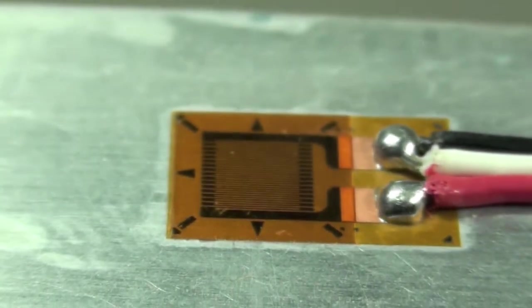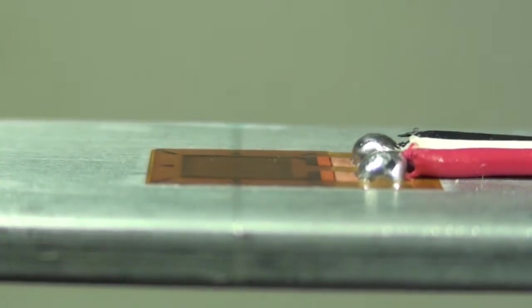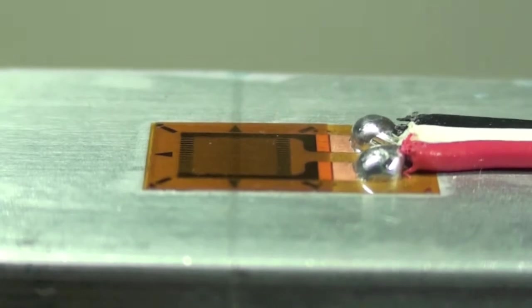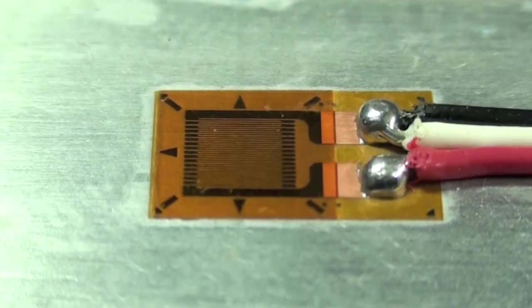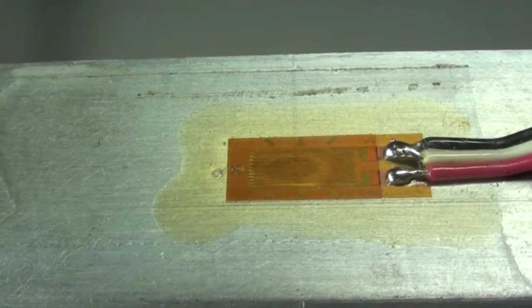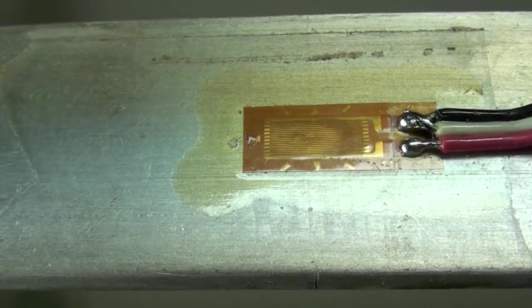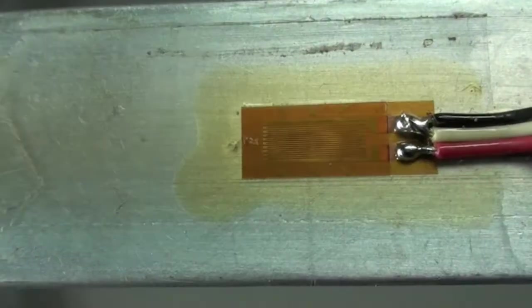A fillet formed by the adhesive along the edge of the gauge would be a very desirable feature as seen here. This would ensure proper anchoring of the gauge to the surface. A change of color inside the grid area would indicate variation in the adhesive thickness or uneven curing of the adhesive.